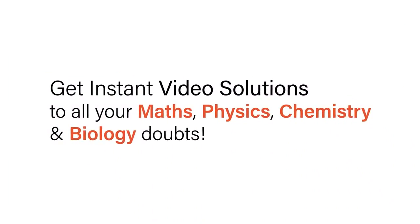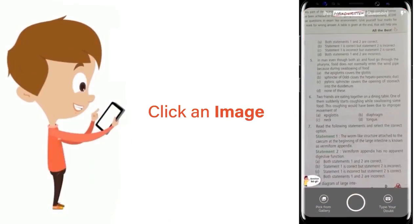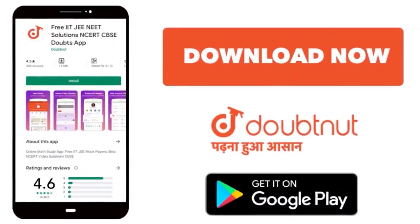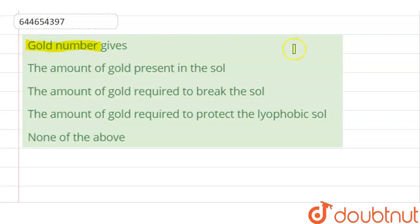With Doubtnut, get instant video solutions to all your math, physics, chemistry, and biology doubts. Just click the image of the question, crop the question, and get instant video solution. Download Doubtnut app today. Our question is: Gold number gives...